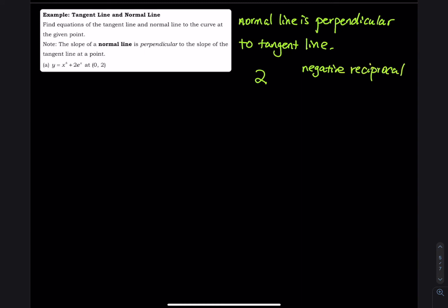Reciprocal means 2 is equal to 2 divided by 1, right? Reciprocal means you swap the numerator and denominator. And the negative, you just put a negative in front of it.